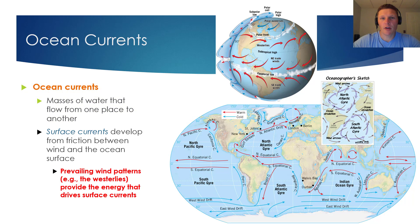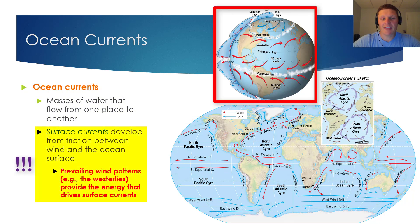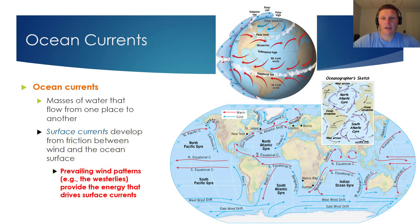It's very important to note that prevailing wind patterns provide the energy that drives surface currents. As those prevailing winds sweep across the surface of the ocean, friction between the wind and the ocean's surface powers their movement. In the global image shown towards the bottom of this slide, you'll see that there are two types of ocean currents, namely warm currents and cold currents. The warm currents are represented by red arrows and the cold currents are represented by blue arrows.